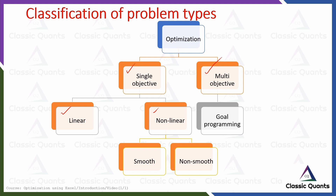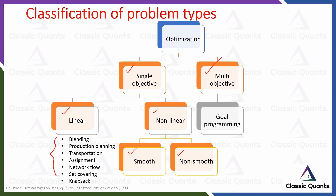Under nonlinear, you have smooth and non-smooth types of problems. Under linear programming, we have different categories such as blending, production planning, transportation, assignment, network flow, set covering, knapsack, and so on — and these are not limited. Under multi-objective models, there are various types, but we will focus on goal programming, confining our modules to goal programming in the case of multi-objective decision making.